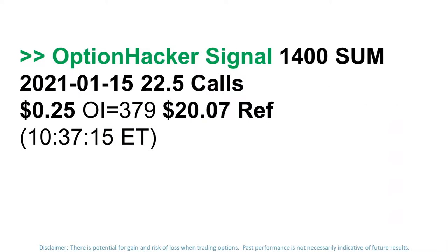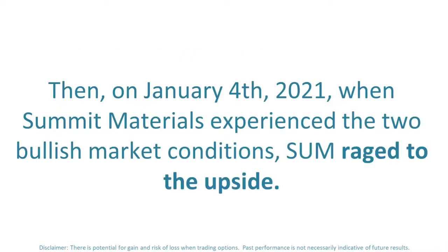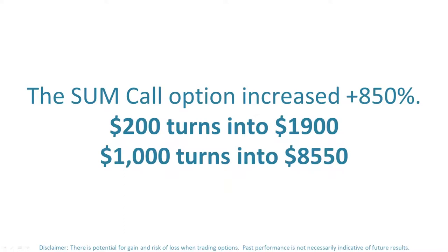Option Hacker signal in SUM — Summit Materials. $1,400 worth of SUM January 15th, 2021, 22.5 calls were bought for a 25-cent debit. This is the right but not obligation to control 140,000 shares of SUM through January 15th expiration on the 22.5 strike. On January 4th, 2021, when Summit Materials experienced two bullish conditions, SUM raged to the upside. The SUM call option increased 850%. Just $200 invested in the signal turned into $1,900. $1,000 invested turned into $8,550.